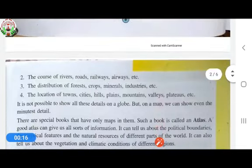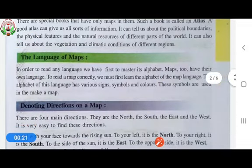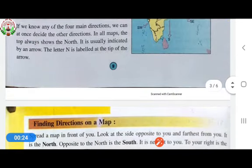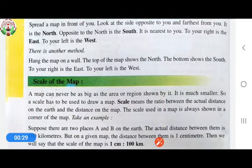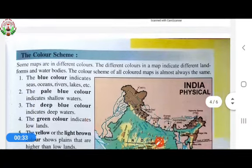The types of maps, an atlas, the language of maps, denoting direction on a map, finding direction on a map, the scales of the map, and the color scheme or the colors on a map.